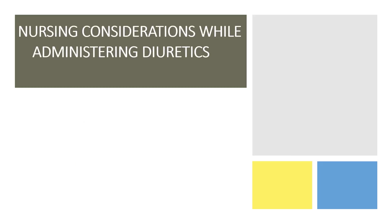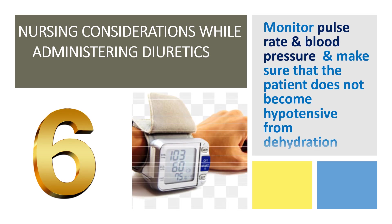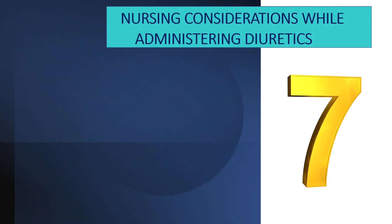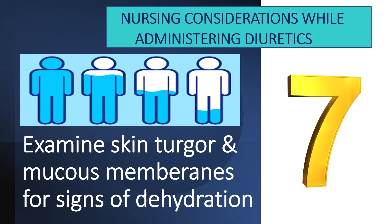Our sixth nursing responsibility is to monitor the pulse rate and blood pressure of the patient so that we can make sure our patient does not become hypotensive from dehydration. The seventh nursing responsibility is to check for signs of dehydration by examining the skin turgor and mucous membrane of your patient.